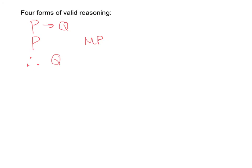Then we have our second one. If P then Q, and we're given that not Q, then we can conclude that not P. And that's by MT.